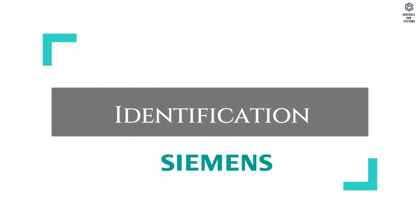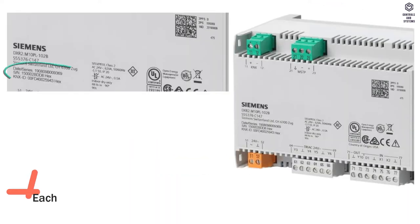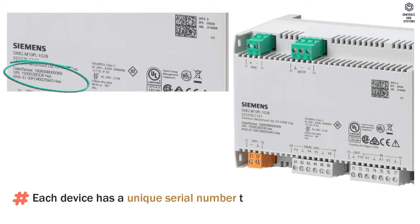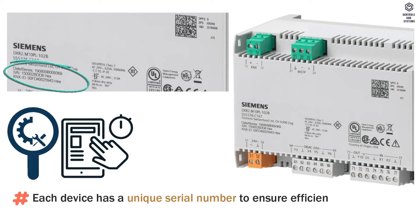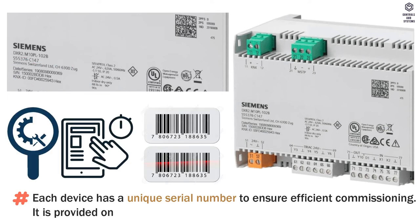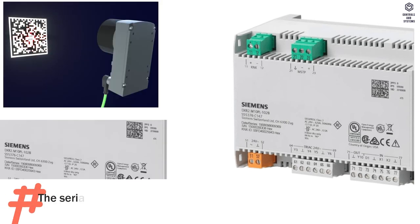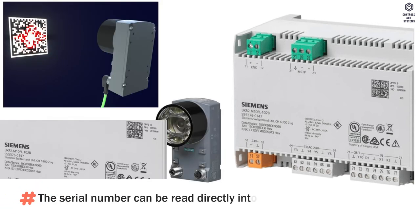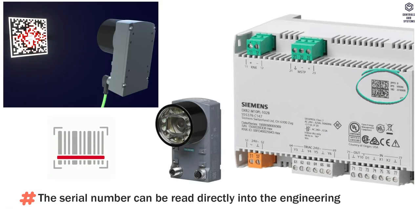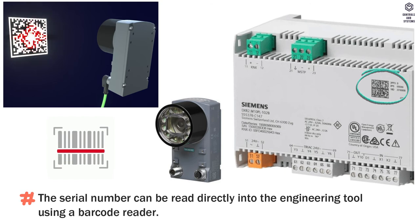SVC is the service button. RUN is the operation LED display. Each device has a unique serial number to ensure efficient commissioning, provided on the adhesive barcode label. The serial number can be read directly into the engineering tool using a barcode reader.